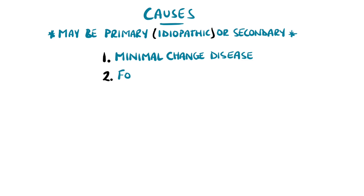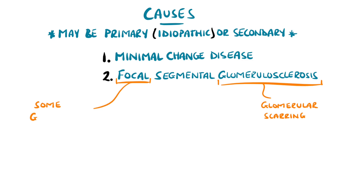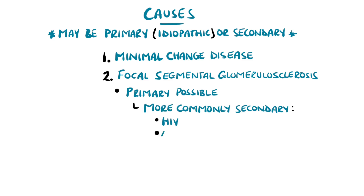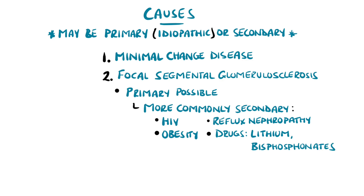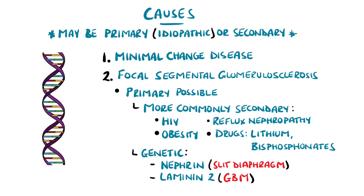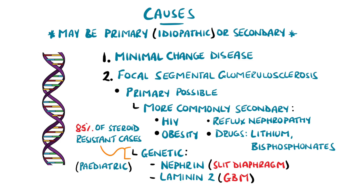Another cause is focal segmental glomerulosclerosis, characterised by scarring of the glomerulus, where focal means some glomeruli and segmental means only parts of the individual glomerulus. It can be primary in nature, but is often linked to secondary causes like HIV, obesity, reflux nephropathy, and drugs like lithium or bisphosphonates. There can also be genetic mutations in genes coding for nephrin, a component of the slit diaphragm, or laminin-2, a component of the glomerular basement membrane, and these are thought to make up 85% of steroid-resistant nephrotic syndromes in children.